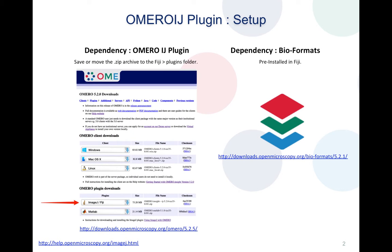To give you more details about the setup, it's a two-step process. The first step involves installation of the OMERO ImageJ plugin under the Fiji plugins folder. The OMERO ImageJ plugin can be downloaded from the downloads page of OMERO under the plugin downloads section. The second part is Bio-Formats, which is an open source Java library that helps in reading and writing of your image files, and this comes pre-installed in Fiji.